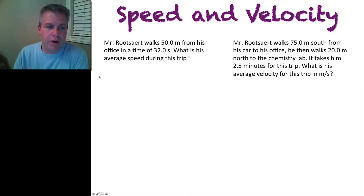So whenever you do a problem here in class, what I always like to do is I just write down everything that I am given. So I know that I am given a distance of 50.0 meters. I know that I am given a time of 32.0 seconds and it is asking me to calculate the speed or the average speed during this trip. And that's what we're looking for.